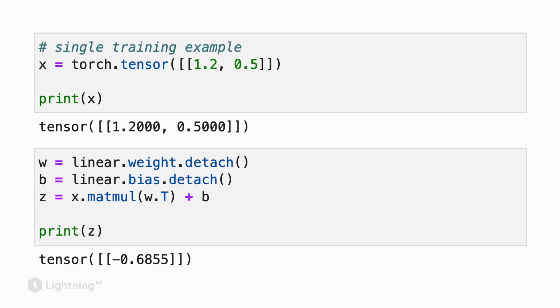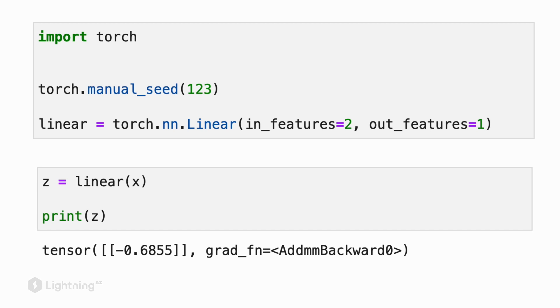Notice also that this code example uses something called dot detach to detach these variables from the computation graph. The whole reason we are doing this is because this is actually not the intended use case of the linear layer, because this is also way too tedious. But there is actually a way simpler way of using the linear layer.